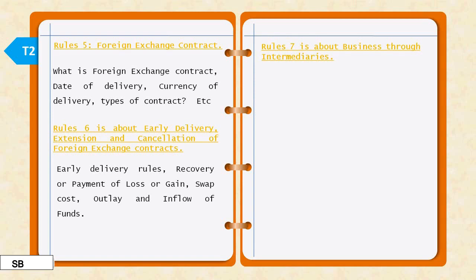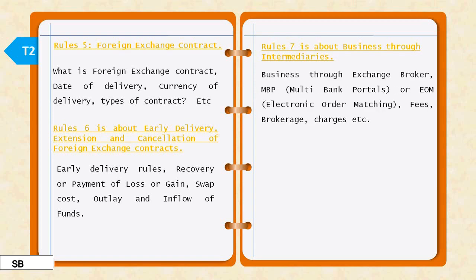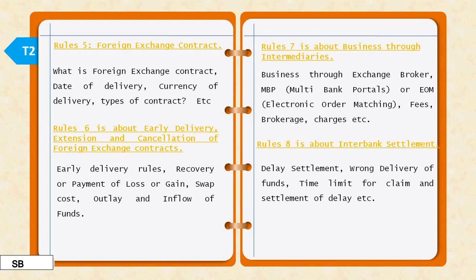Rules number 7 is about business through intermediaries — when authorized dealers do business through intermediaries instead of directly. It covers who the intermediaries will be, how they will be paid, and other details. The main intermediaries in the foreign exchange market are exchange brokers, multi-bank portals, and EOM (Electronic Order Matching). Rules number 8 is about interbank settlement — how interbank settlement works, what happens in case of delay, wrong delivery, or if funds are not claimed or settled within the time limit.